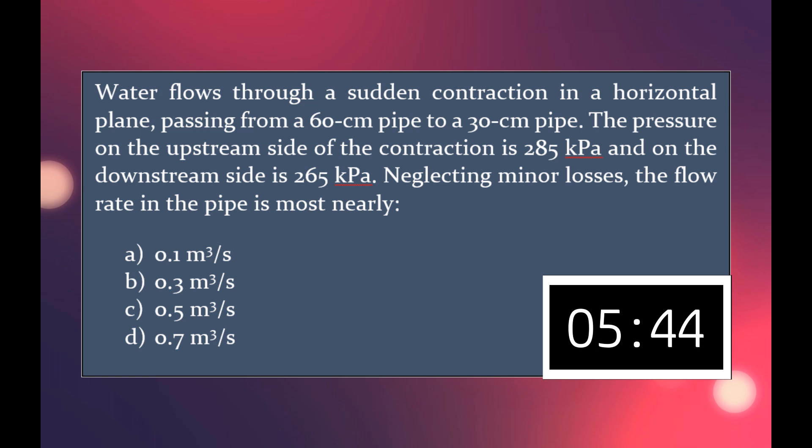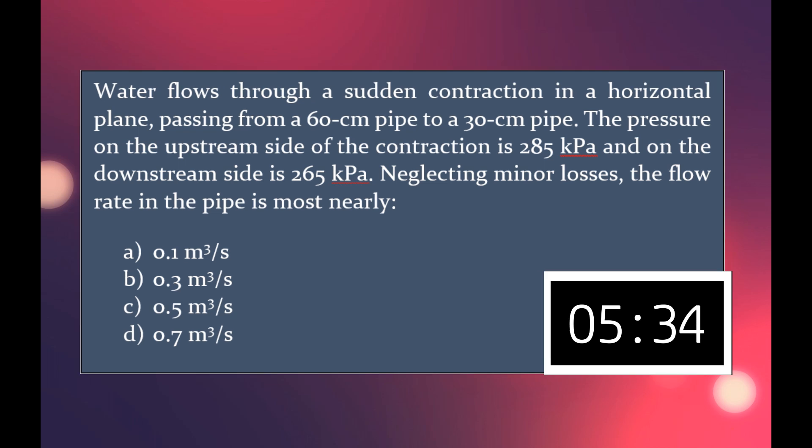the flow rate in the pipe is most nearly A) 0.1 cubic meters per second, B) 0.3 cubic meters per second, C) 0.5 cubic meters per second, or D) 0.7 cubic meters per second.